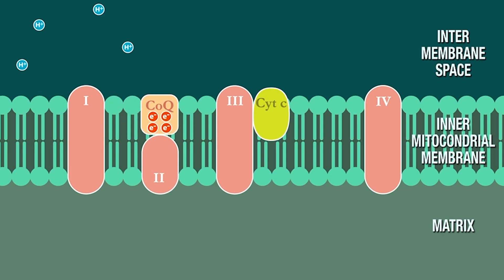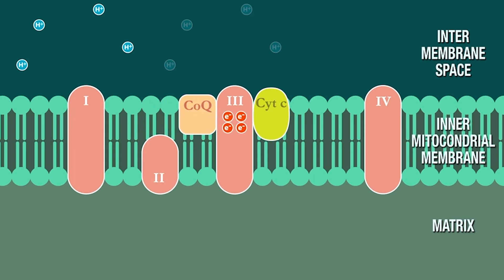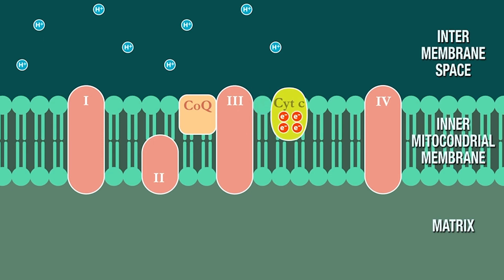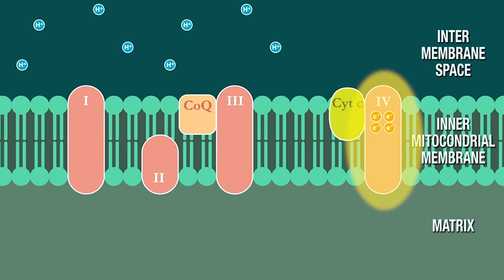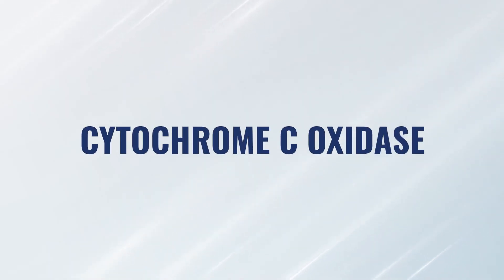Then we need to get all the electrons from complex two over to complex three, and then from complex three to complex four. The mobile carrier that does that is a molecule called cytochrome C. Now with all electrons at complex four — also known as cytochrome C oxidase — we're oxidizing that, and we're actually going to make water.